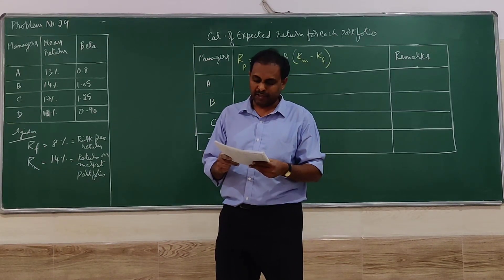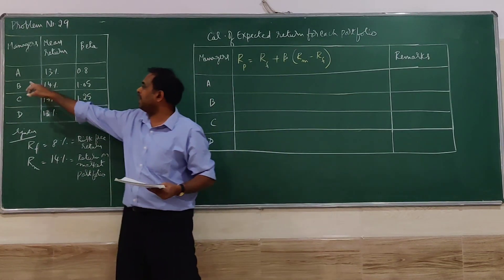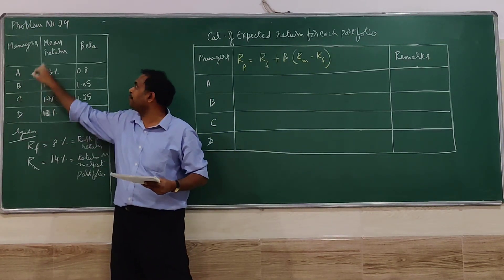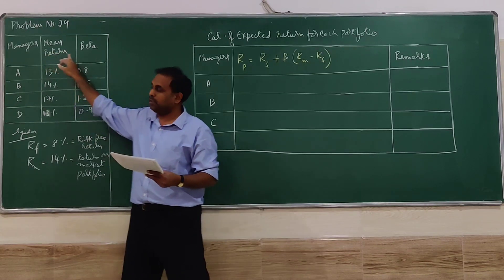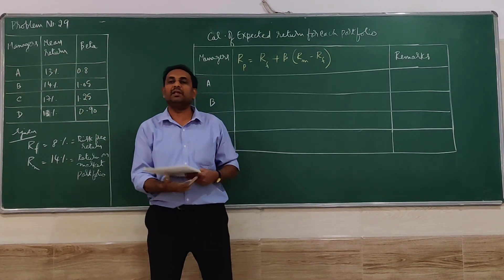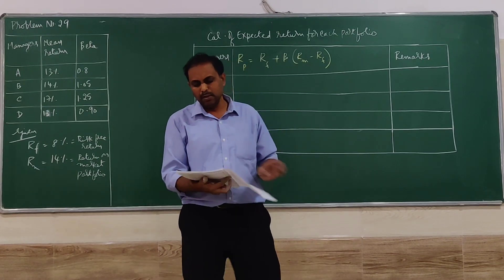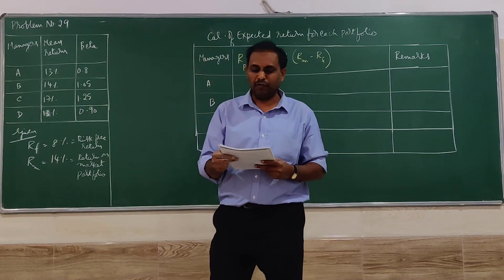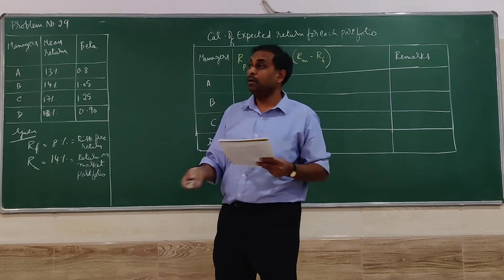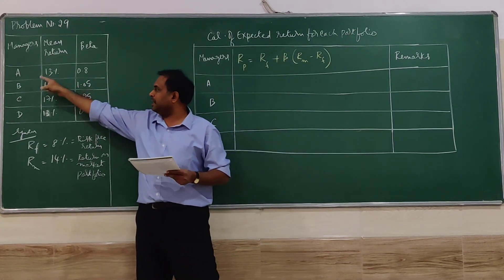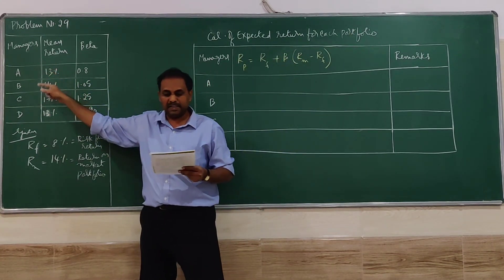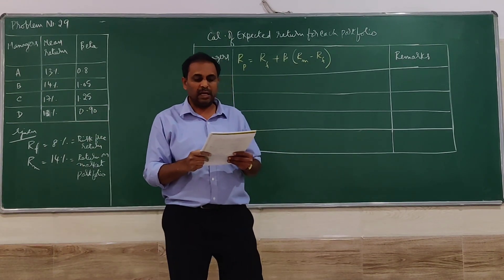You are given the following results for your portfolio managers during the period. Four managers are given: A, B, C, D. Mean return is given and the beta value is given in the problem. With the help of that, we have to go for calculation of expected return of each portfolio manager.